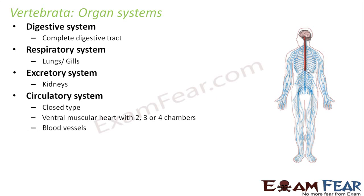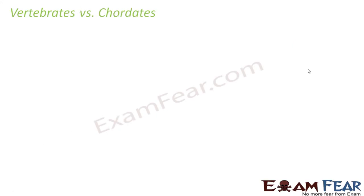Blood vessels are present to carry blood from the heart to different body parts as well as back to the heart. The nervous system consists of the central nervous system, peripheral nervous system, and autonomic nervous system. The central nervous system includes the brain and spinal cord. The peripheral nervous system includes all peripheral nerves connecting different parts of the body. The autonomic nervous system is the link between the central nervous system and the internal organs. Everything is highly specialized and well-developed in case of vertebrates.